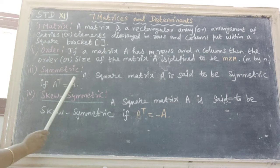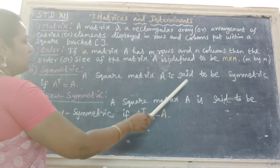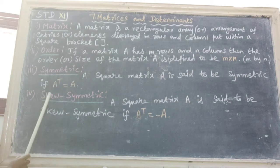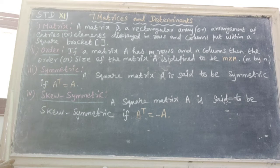Next definition is symmetric. A square matrix capital A is said to be symmetric if A transpose equal to A.